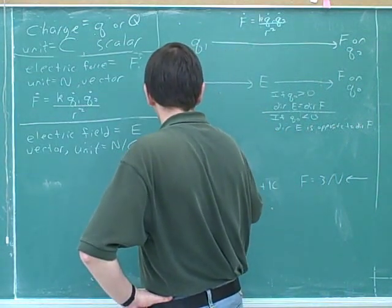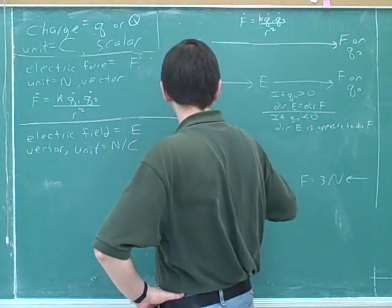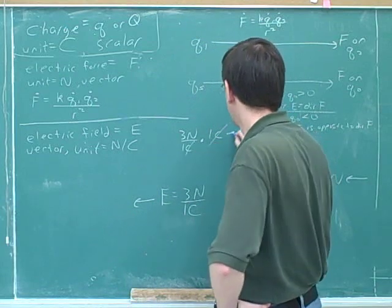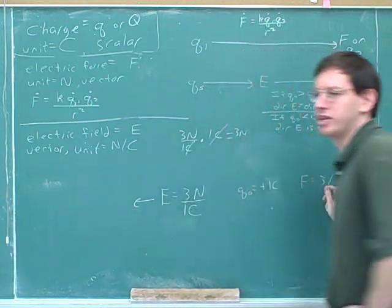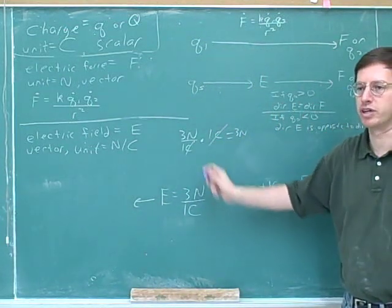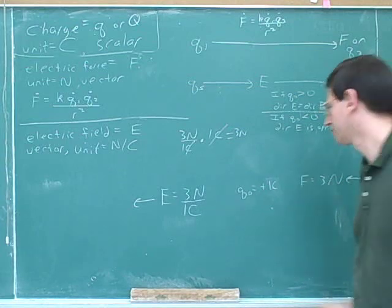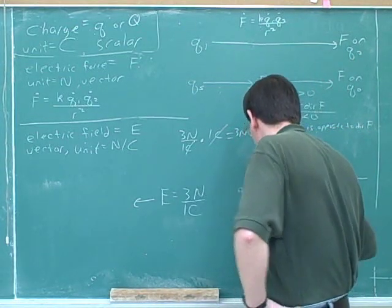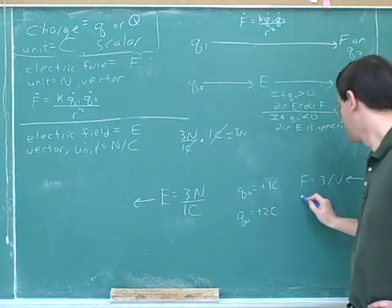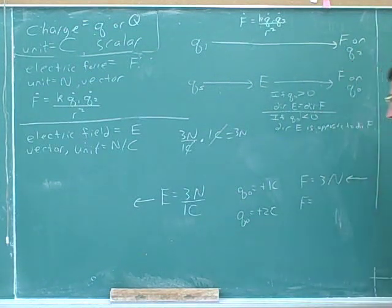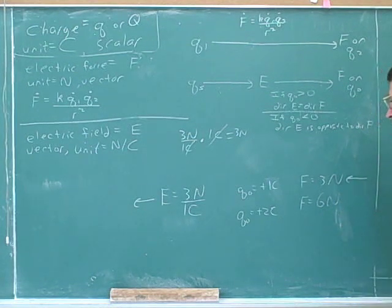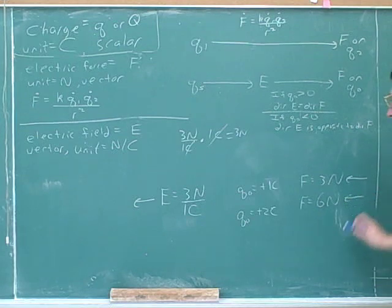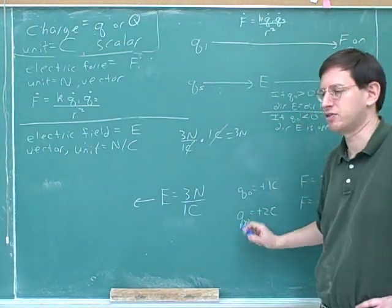Mathematically, we've got three newtons per one Coulomb, and we've got a one-Coulomb charge. The Coulombs cancel and we end up with three newtons. Now let's say we have a two-Coulomb charge — what would the force on that be? Six newtons. And the direction? To the left as well, still the same direction, because we still have a positive charge.